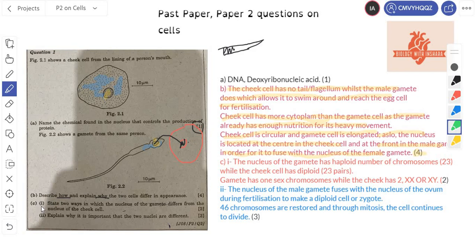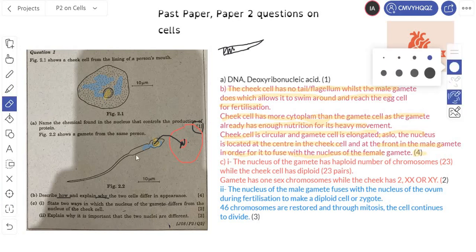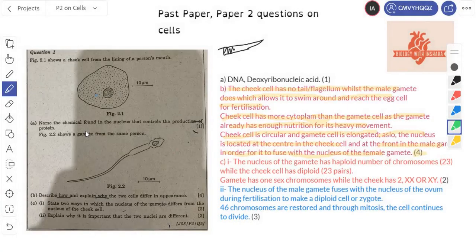Let's move on with your C part one. State two ways in which the nucleus of the gamete differs from the nucleus of the cheek cell. Now the question says, how does the nucleus of the male gamete differ from that of the cheek cell? I'll just rub this for a second so that the diagram is clear. Moving on to the other question. So yes, there are many ways in which the nucleus of your gamete is different from the nucleus of your cheek cell. Let us understand that in more detail.